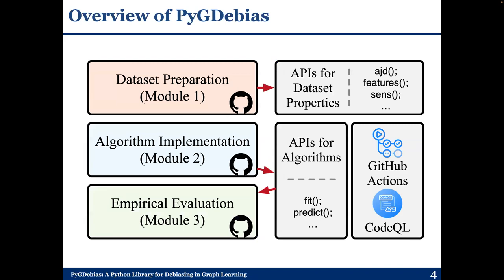In this paper, we introduce a novel Python library called PyGDeBias, where we have dataset preparations for the research of algorithmic bias in graph machine learning. In the second module, we present algorithmic implementations for existing popular methods. In the third module, we introduce empirical evaluation methods, which have been integrated into this library. We provide easy-to-use APIs and different types of methods for broader community participation, including GitHub Actions and CodeQL.